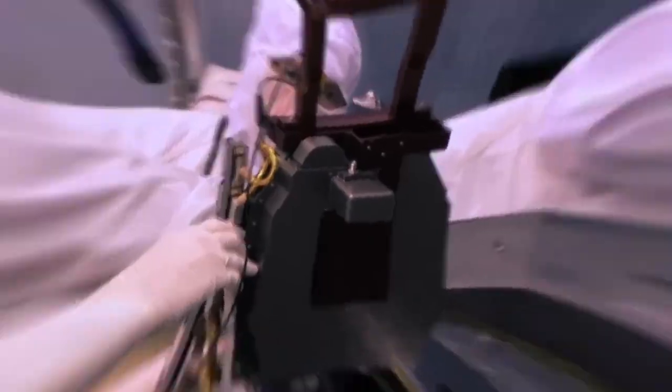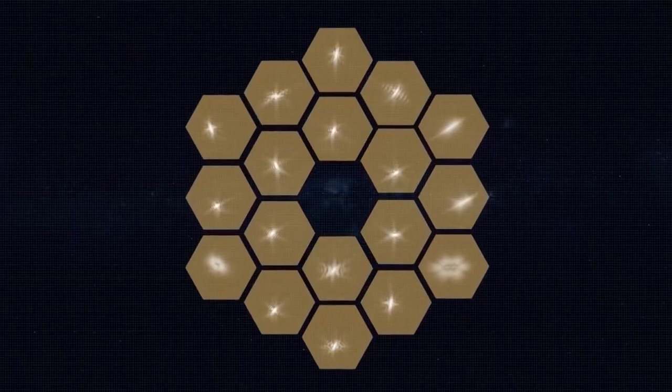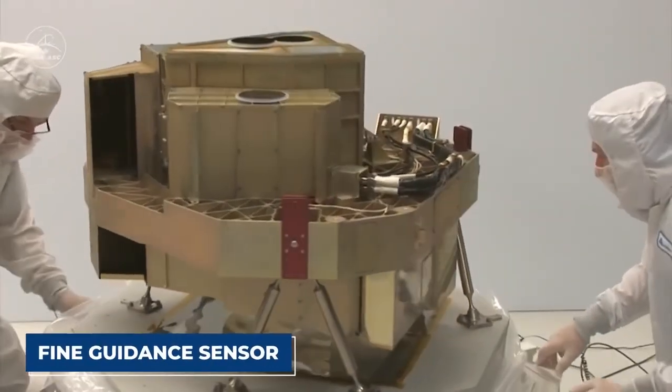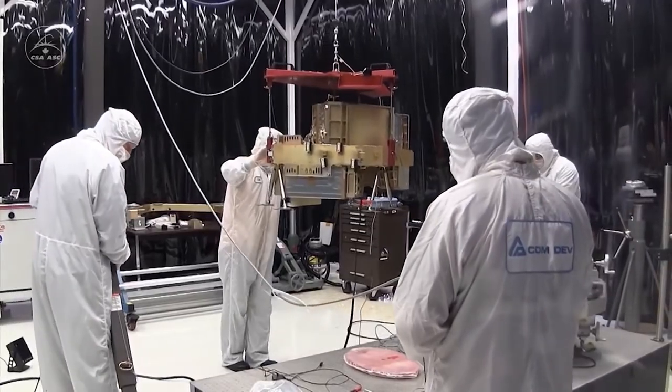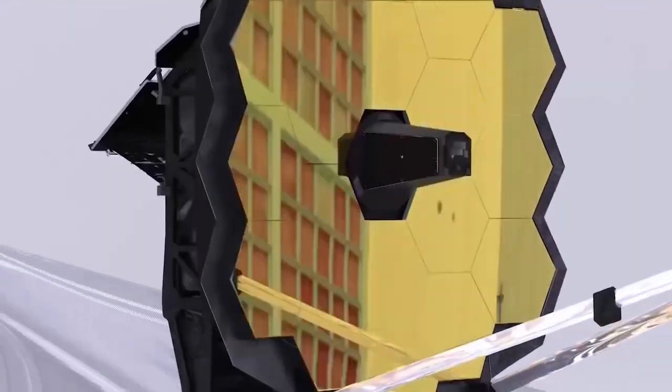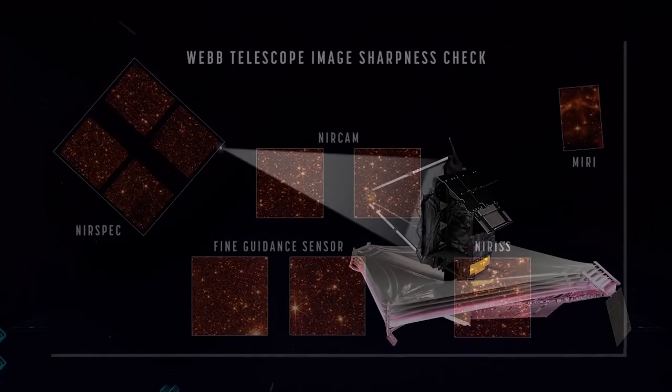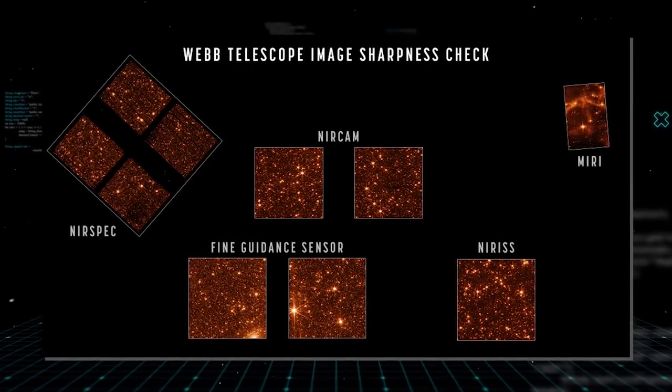This is known as spectroscopy and is a major feature of JWST's science instruments. Scientists have four instruments on the telescope, and these instruments are optimized to do different things. Obviously, the imagers take images of the universe in both the near-infrared and mid-infrared part of the spectrum.